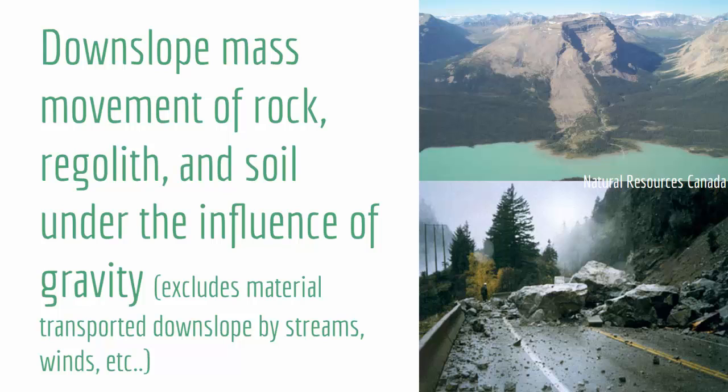Notice that if we have flat land, we will not have any mass wasting because we don't have a slope and in turn we don't have any movement of rocks. In space and in zero gravity, since we don't have any force that can act on a rock and move it, we will not have any mass wasting. But on the ground, on Earth, we have slopes and we have gravity. This leads to downslope movement of rocks that are called mass wasting, and sometimes they are called landslides in the more popular term.